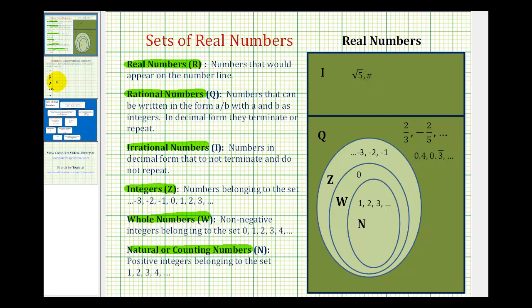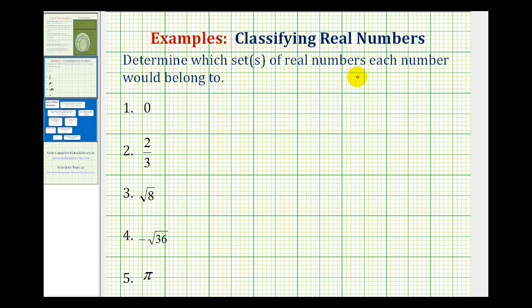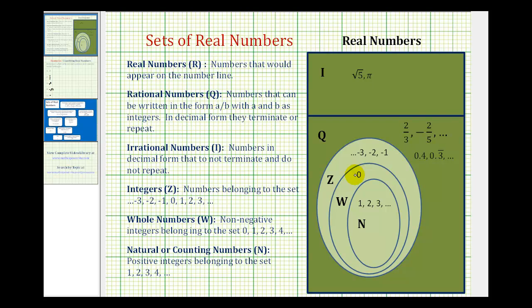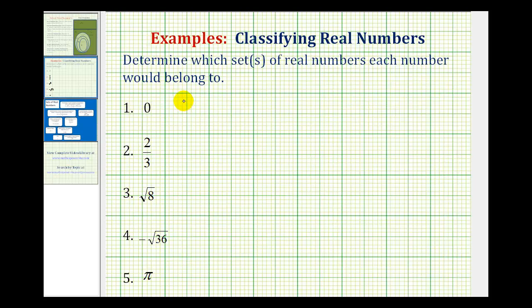Let's look at a few examples. We want to determine which set or sets of real numbers each number belongs to. Number one: zero. Looking at our Venn diagram, zero is here, which means it's a whole number. Working our way out, Z represents the set of integers, so zero is an integer. Q represents the rational numbers, so zero is also rational. And of course, all numbers are real. So zero is a whole number (W), an integer (Z), rational (Q), and a real number.